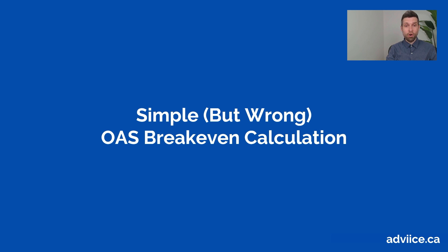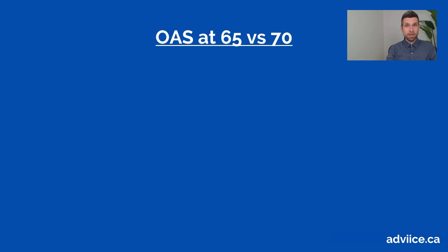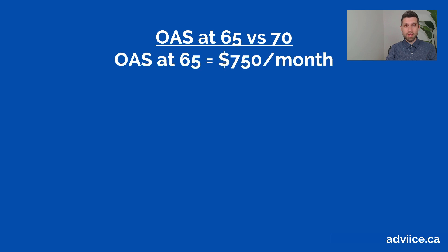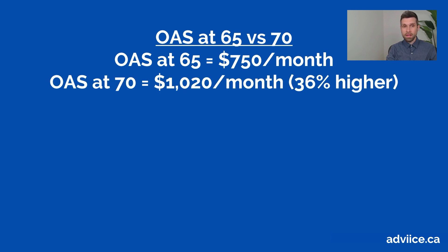Let's go through a simple — but incomplete — OAS breakeven calculation. When we think about old age security at 65 versus 70, we first want to identify how much we would receive at age 65. We're going to use a round number of $750 a month, which is fairly close to the current maximum for old age security. If you delay until age 70, you'd get 36% more, so you'd get $1,020 a month instead of $750 a month.